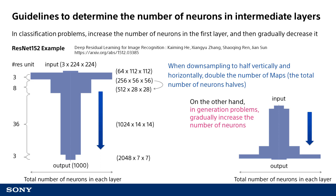First, let's look at the guidelines for determining the number of neurons in intermediate layers. As for the classification problem, basically you make the number of neurons large immediately after input and then gradually make it smaller.